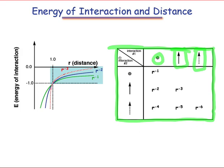And what you can see from the graphs is that the strongest interactions will be those involving 1 over r. 1 over r squared will be slightly weaker, and 1 over r cubed slightly weaker as we move away from a distance of 1.0 between the two groups.